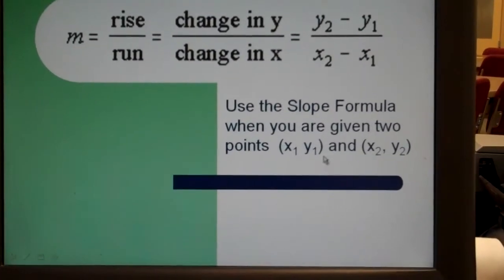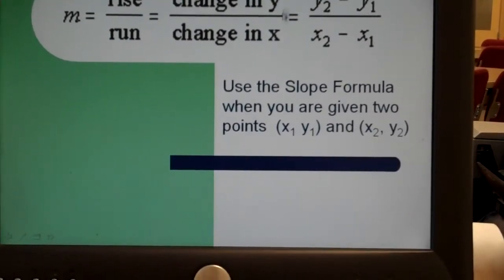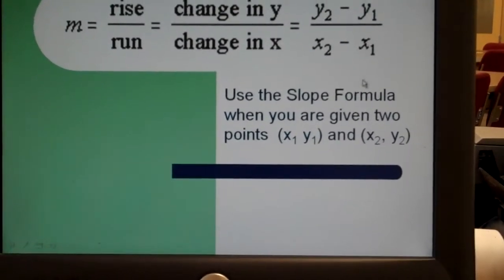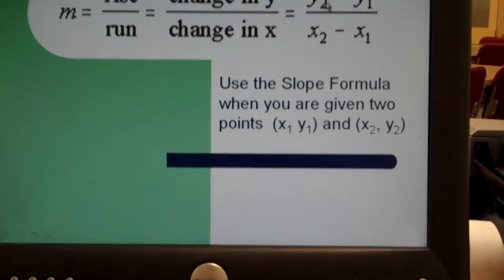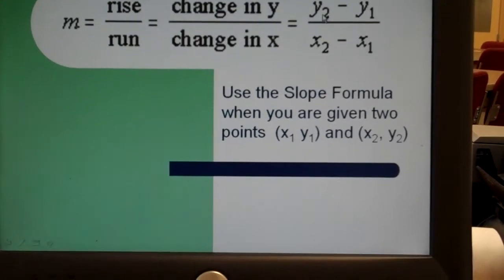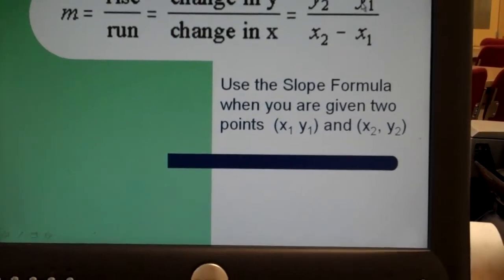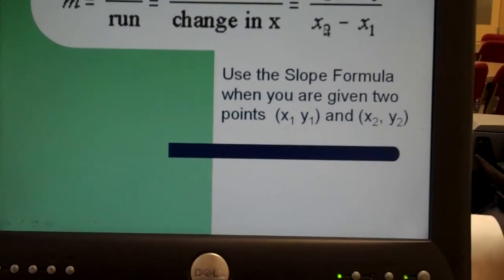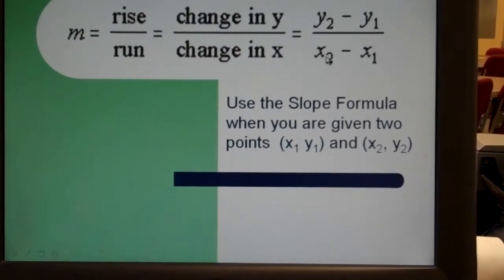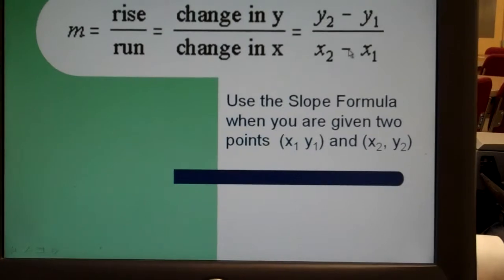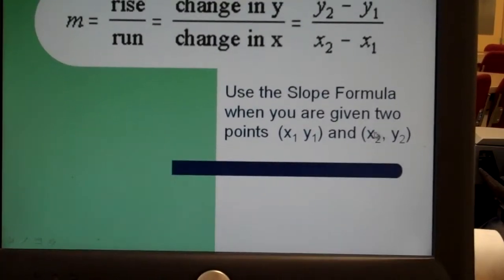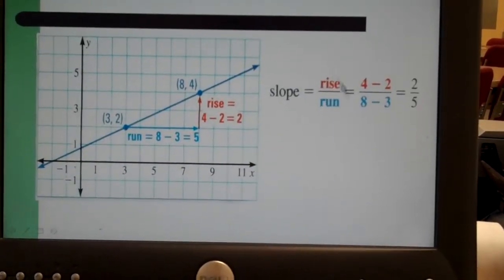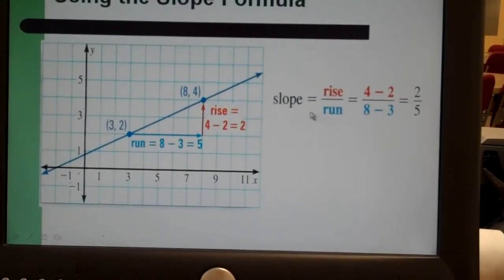Now we have this formula and kids get this and really, they make it really difficult. And it does look kind of difficult. But what this is saying is that you're just subtracting the Y part of the second point minus the Y part of the first point. That's your rise. That's the difference in the heights of two points. And you're putting that over your run. The X part of the second point minus the X part of the first point. That's just how far it goes over. So it's just rise over run. Let's look at an example of this.